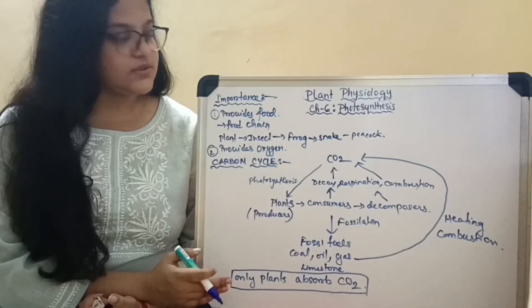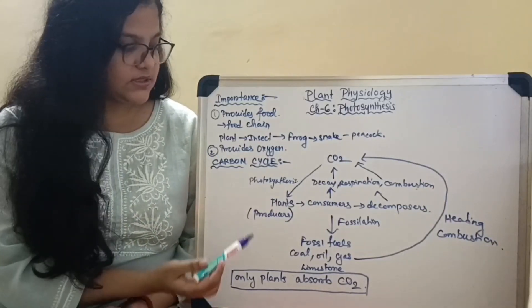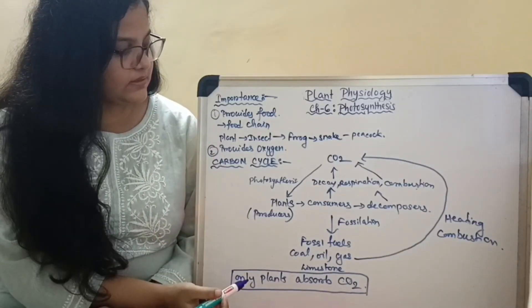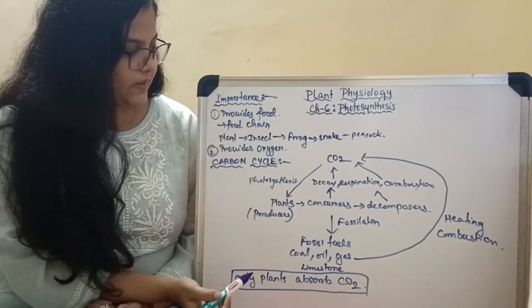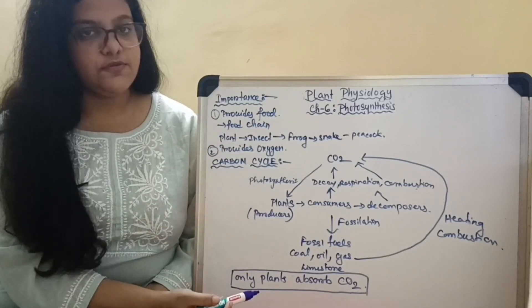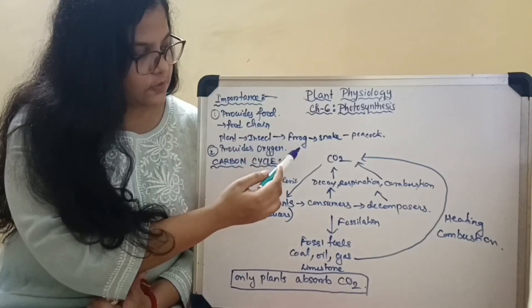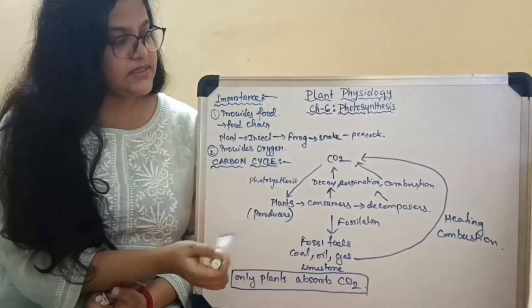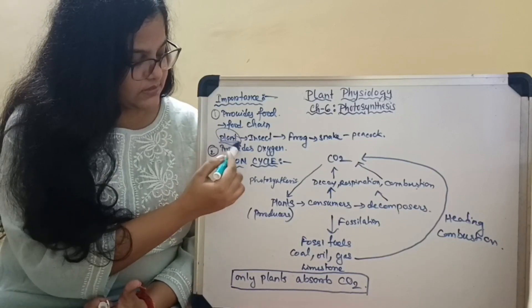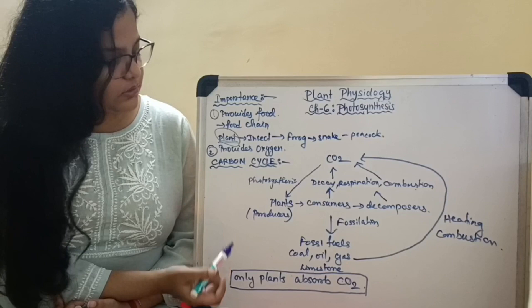After photosynthesis, what is important is the food provided and the oxygen provided. We all take up oxygen to survive, but food is also necessary for survival. The food provided by plants through photosynthesis is transported throughout the food chain. Plants are eaten by insects, insects by frogs, frogs by snakes, and snakes by peacocks — the food chain continues, and at the beginning of it is always the food provided by the plant, directly or indirectly.